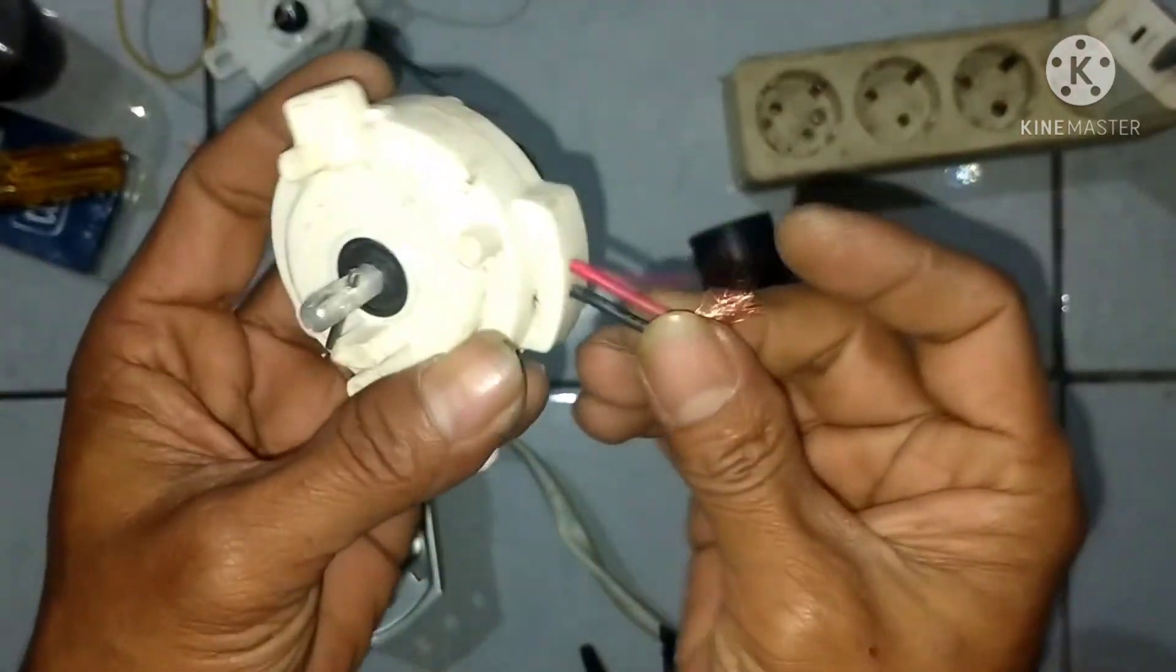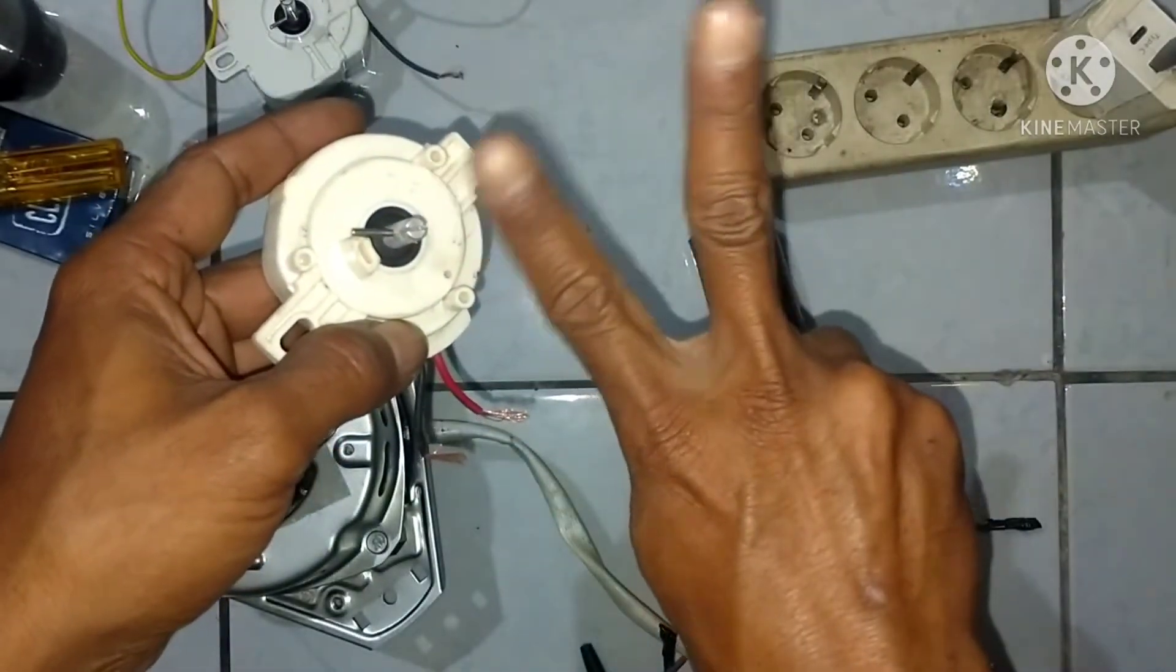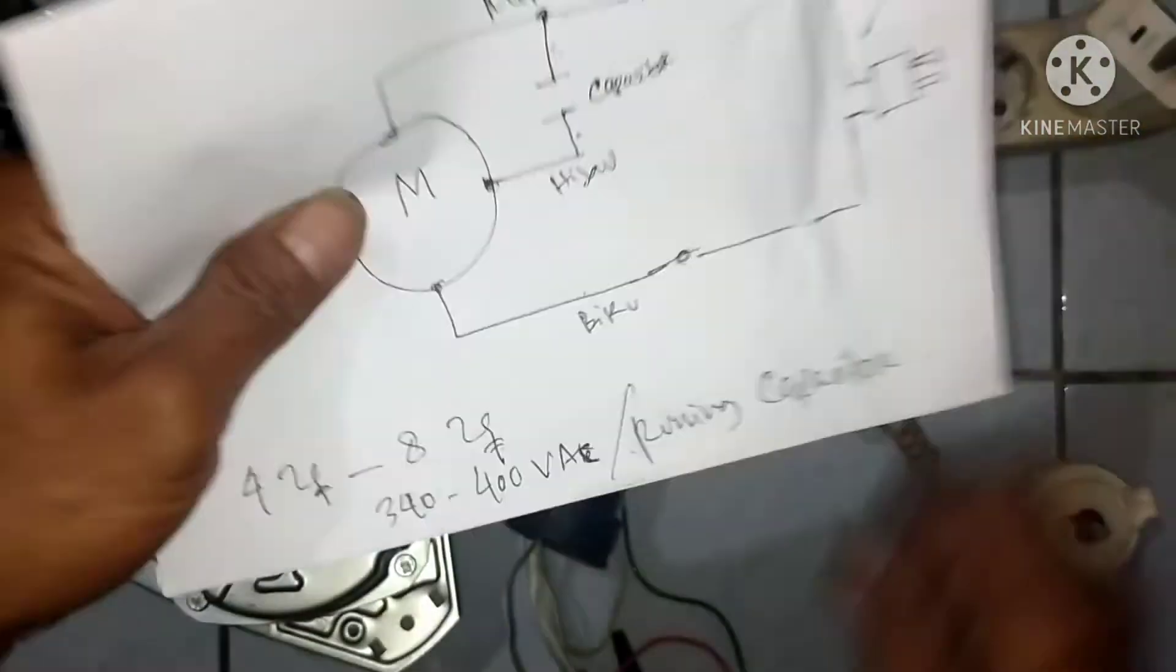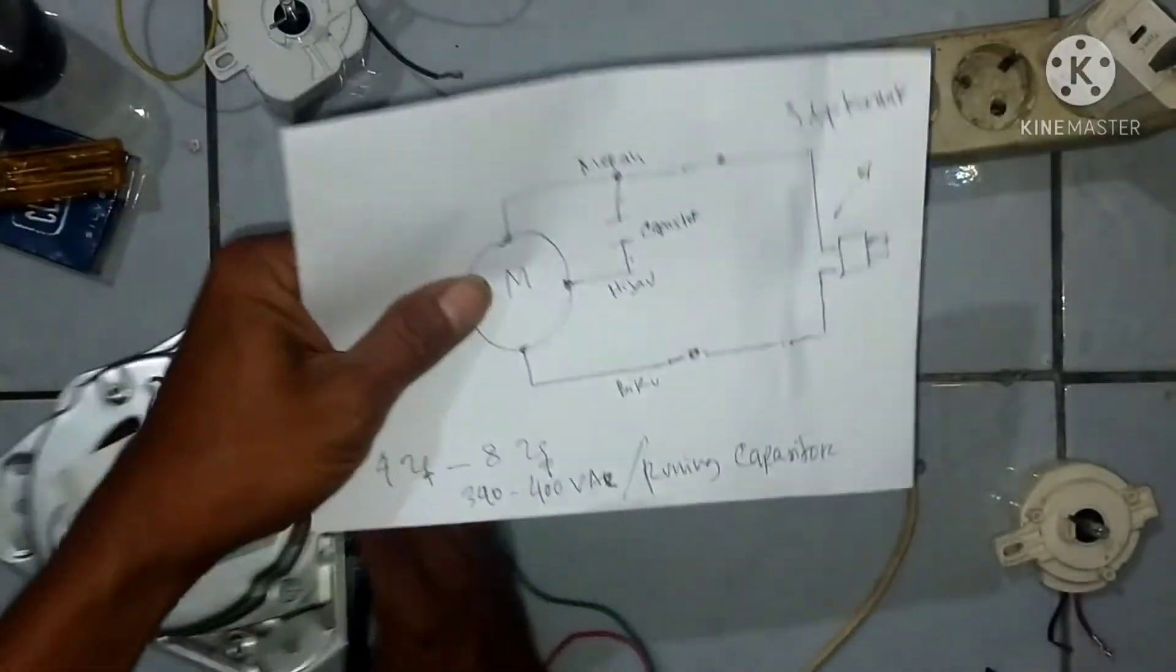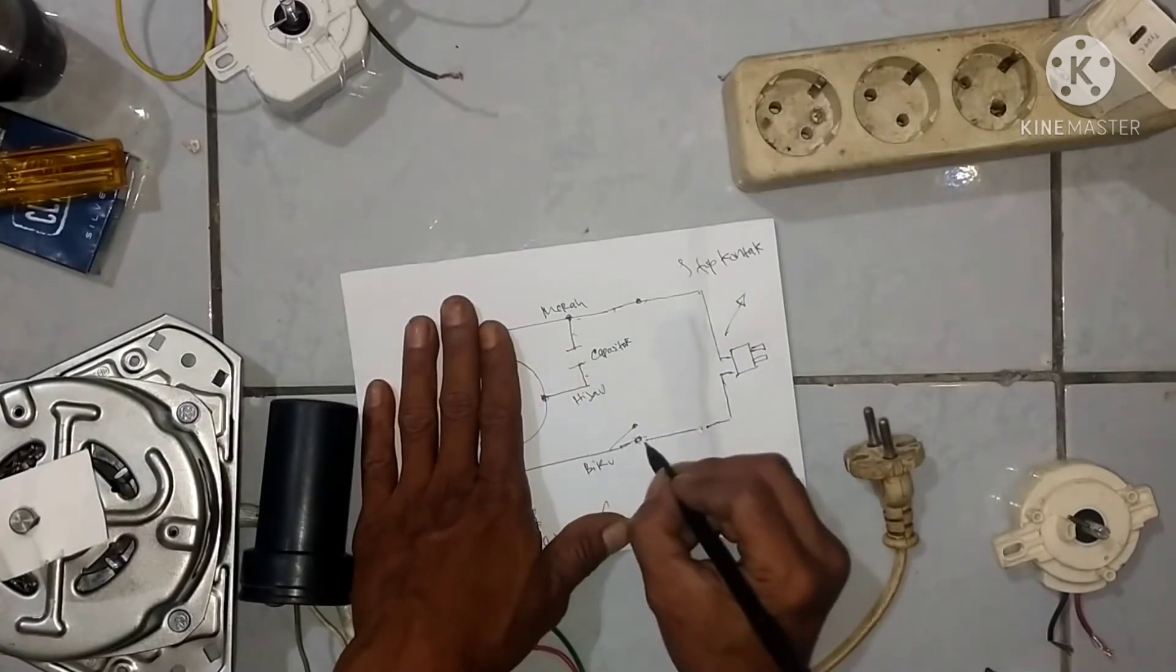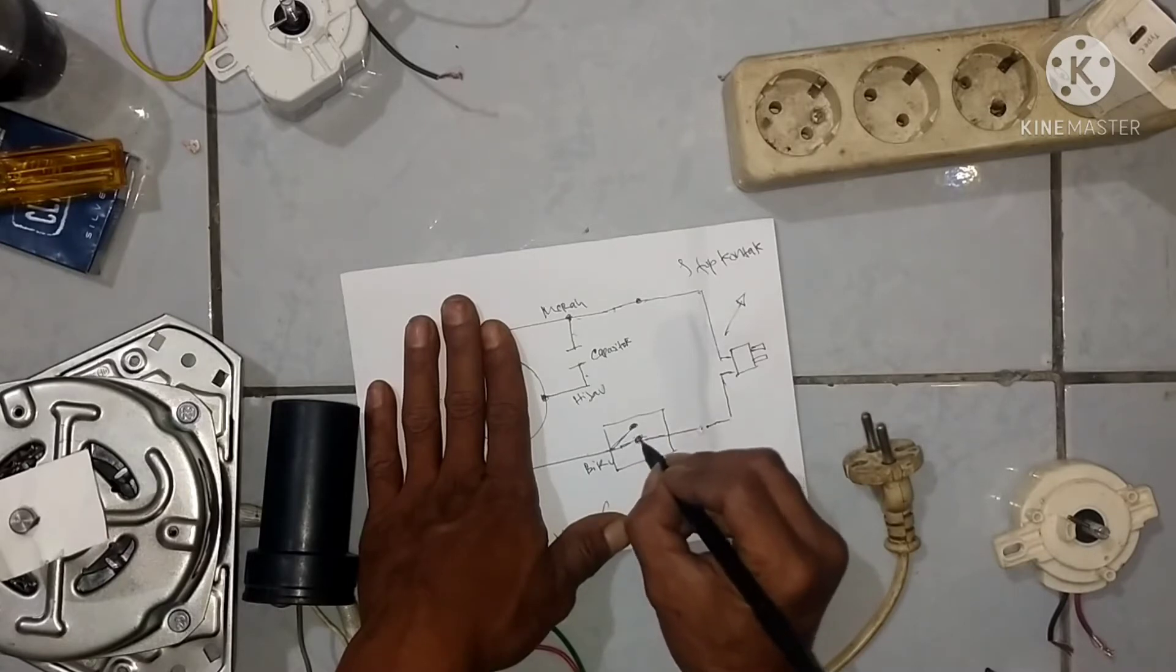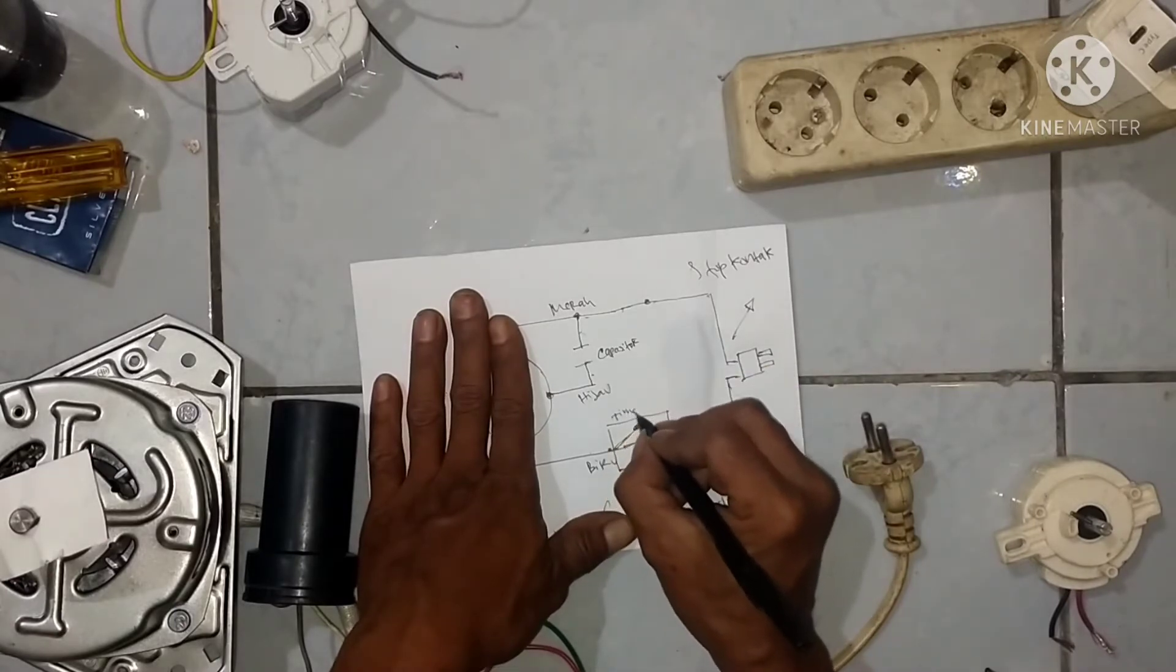Temer spin nih, temer spin itu ada dua kabel. Dua kabel dia fungsinya pemutus aja. Pas kita putar dia ngabisin waktu sesuai yang kita inginkan. Kita hubungkan di netral ya yang sendiri kestep kontak. Yang biru sendiri kestep kontak kita putus. Berhubung pakai temer saya ubah gambarnya dengan platina yang menggambarkan itu bisa nyambung bisa putus, atau dengan kata lain itu gambar temer ya teman-teman.